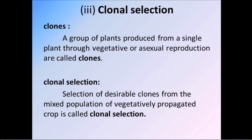What is clonal selection? A clone is a group of plants produced from a single plant through vegetative or asexual reproduction. Clonal selection is the selection of desirable clones from a mixed population of vegetatively propagated crops. From a mixed population, the plants with desirable characters are selected — that is called clonal selection.